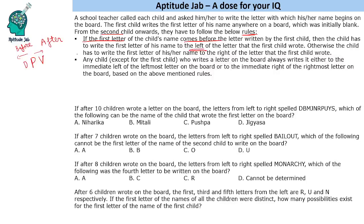That is the first condition. The second condition is: any child except the first who writes a letter on the board always writes it either to the immediate left of the leftmost or to the immediate right of the rightmost letter on the board, based on the above rule. Let us try to solve the questions — each question requires us to find the sequence.